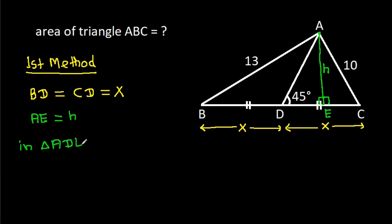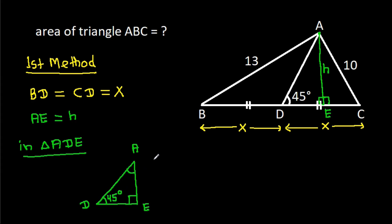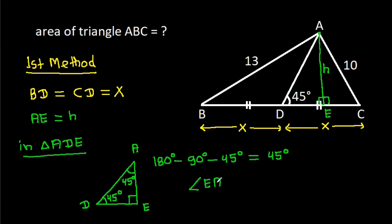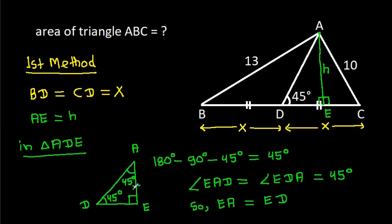And suppose AE is H. Now in triangle ADE, this angle is 90 degrees and this angle is 45 degrees. So this angle will be 180 minus 90 minus 45, that will be 45 degrees. We have angle EAD equal to angle EDA, that is 45 degrees. So EA will be equal to ED, and EA is H, so ED will be H.